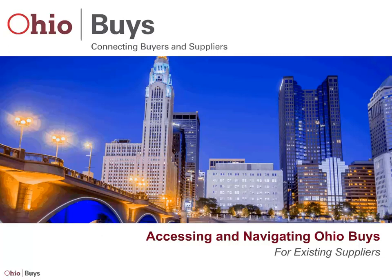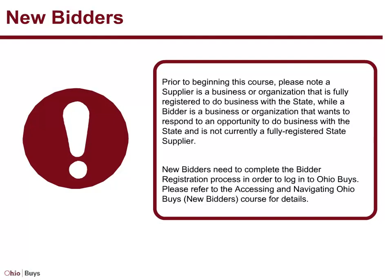Welcome to the Accessing and Navigating Ohio Buys for Existing Suppliers training course. Prior to beginning this course, please note a supplier is a business or organization that is fully registered to do business with the state, while a bidder is a business or organization that wants to respond to an opportunity but is not currently a fully registered state supplier. New bidders need to complete the bidder registration process in order to log into OhioBuys. Please refer to the Accessing and Navigating Ohio Buys for New Bidders course for details.